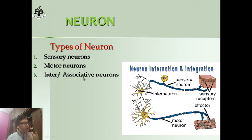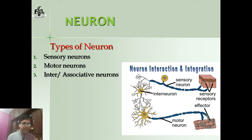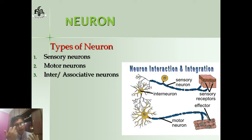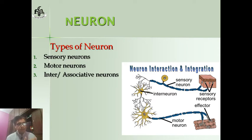First of all, the sensory neuron. The sensory neuron carries messages from the sensory organs — that is, sensory receptors like the eye, ear, nose, tongue, and the skin. In this diagram you can see the skin as an example.